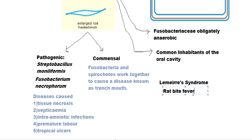The difference between rat bite fever and Haverhill fever is the route of infection. Rat bite fever is caused specifically by the bite of a rat, while Haverhill fever is caused by the same bacteria entering the body through other means — such as through food, air, or close contact with rodents — without an actual rat bite. Therefore, we call it Haverhill fever in those cases.